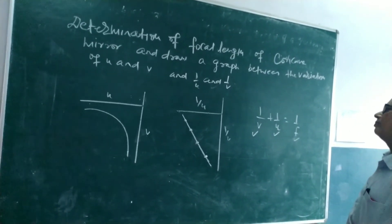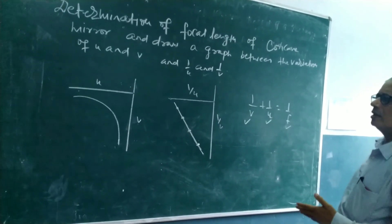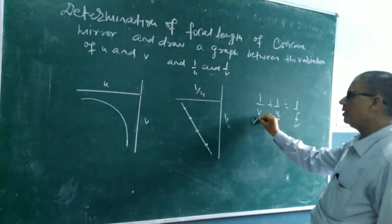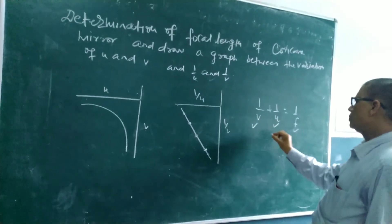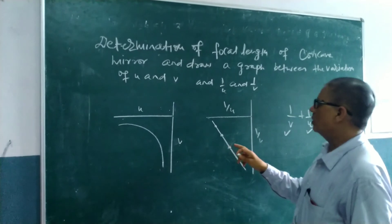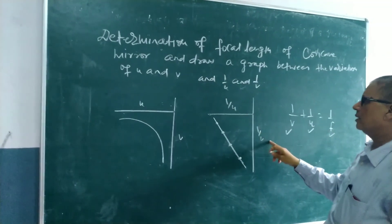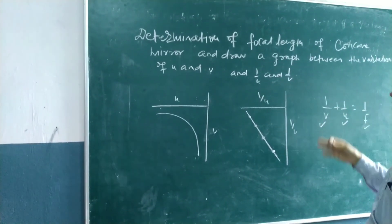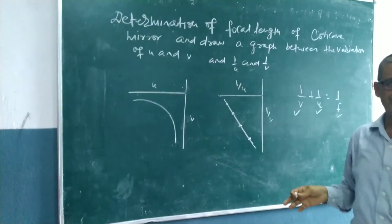By changing the position of object for different positions, we get the different corresponding positions of v. Now you draw a graph between u and v and also between one by u and one by v. In this way you obtain the value of focal length of concave mirror. Thank you for watching this video.